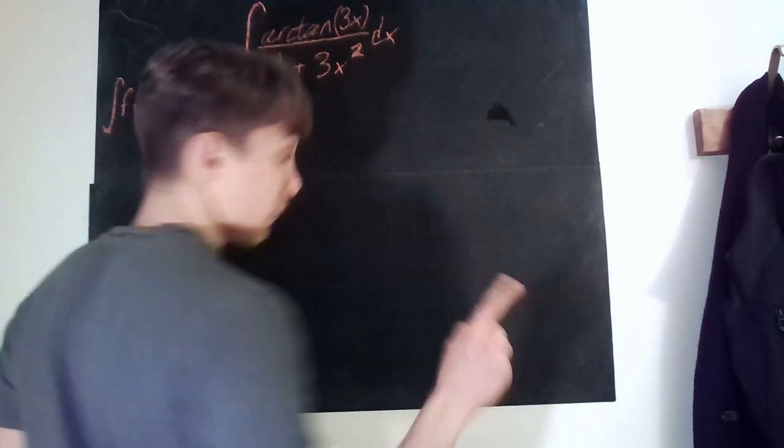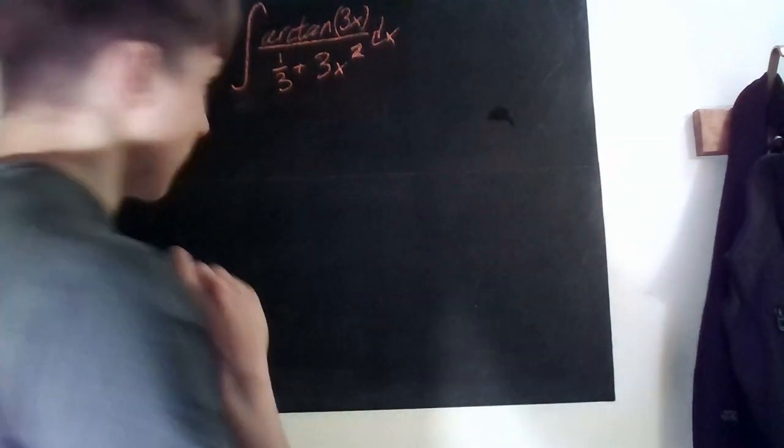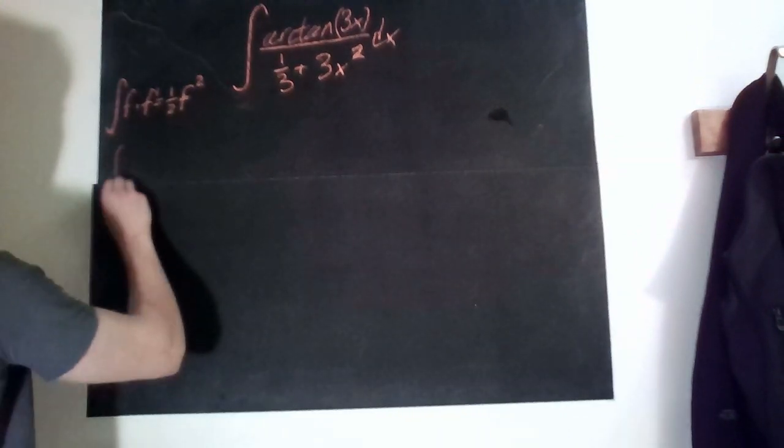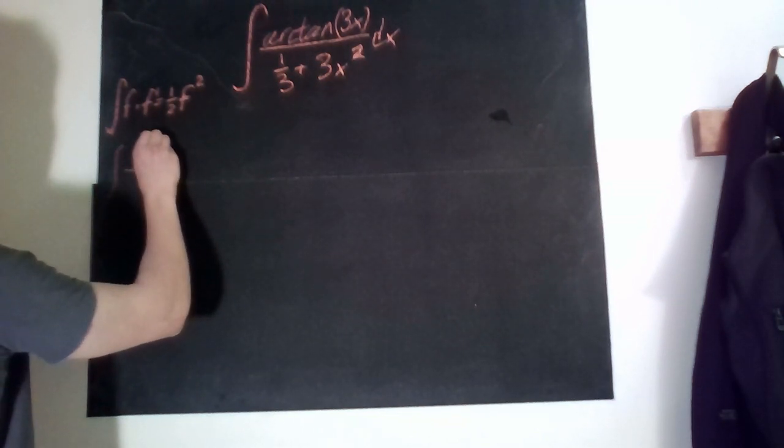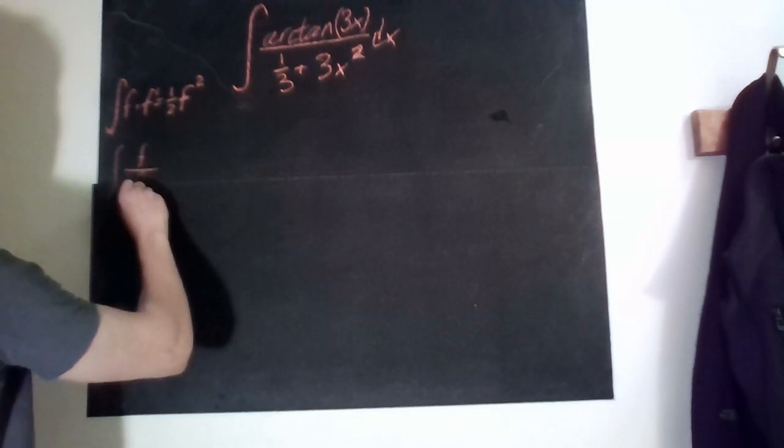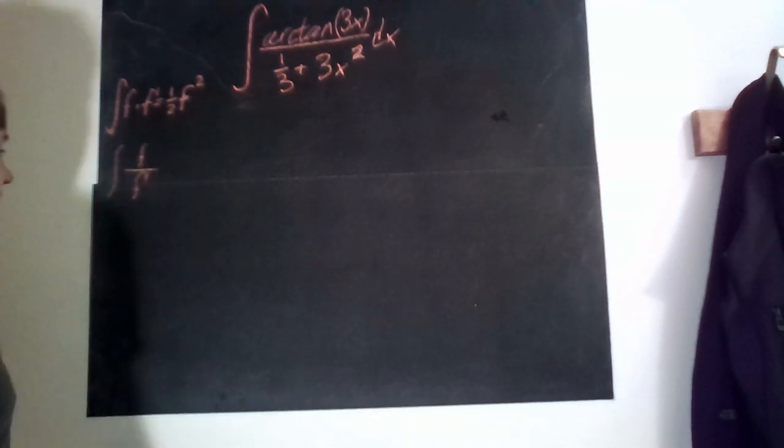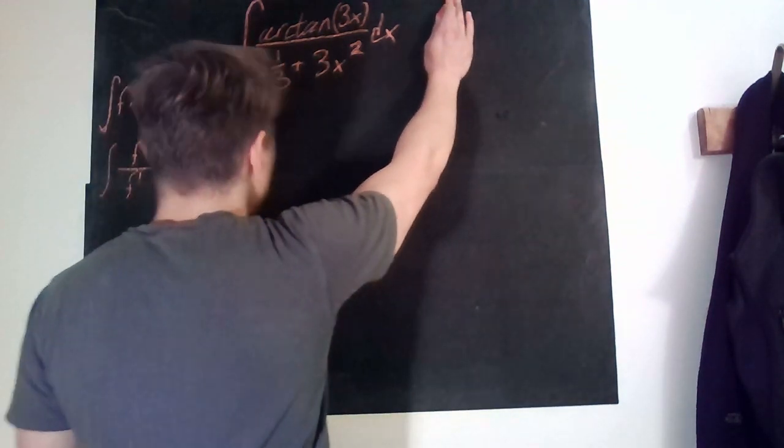And before we begin, I just had a quick question that maybe some of you could answer. Is there a trick for when you have the integral and you can identify that you have f over f prime? Because f prime over f is just ln, but is there a trick for the inverse? If you have any answers, please leave it in the comments.